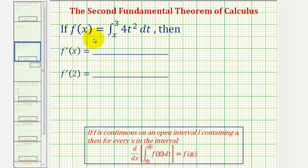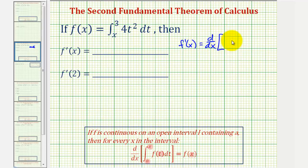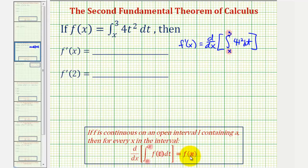So if we're given this integral equal to f and we're asked to find f prime of x, that means we want to find the derivative of this integral with respect to x. So f prime of x equals the derivative with respect to x of the integral of four t squared from x to three. But notice how the lower limit is the variable x and the upper limit is the constant three — this integral does not fit the form given by the second fundamental theorem of calculus.